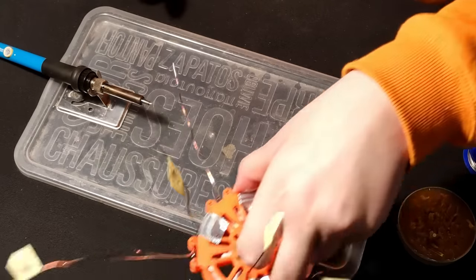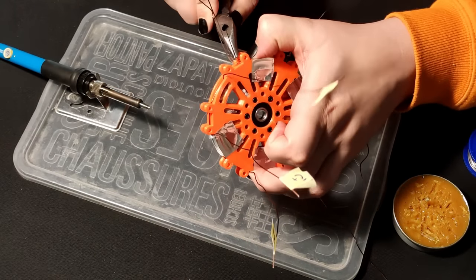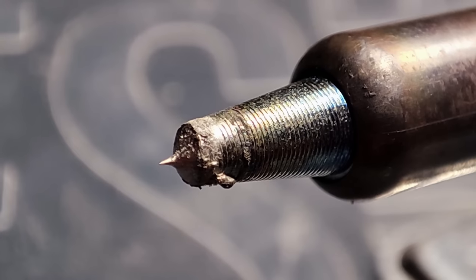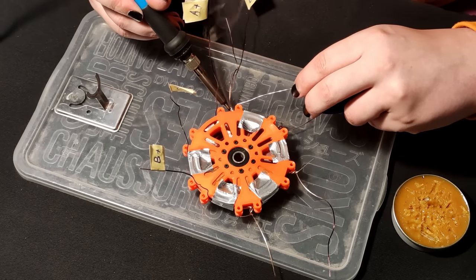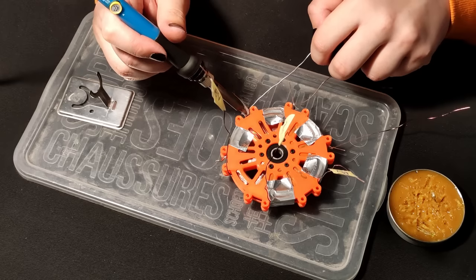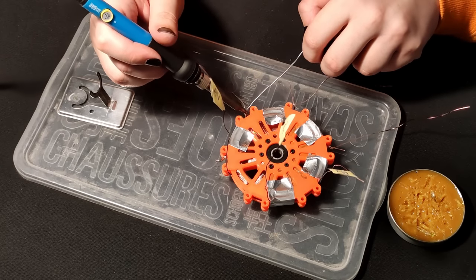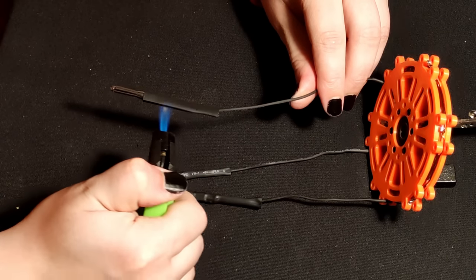Next, it was time to solder the coils together, which was easier said than done with the pure chinesium soldering iron I have. First, I connected the opposing coils on the stator in series, giving me the required three phases. After which, I took the same end of each phase and soldered them all together.